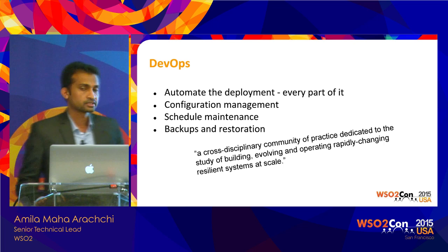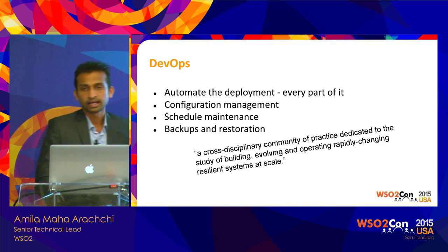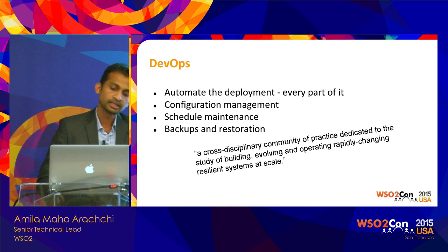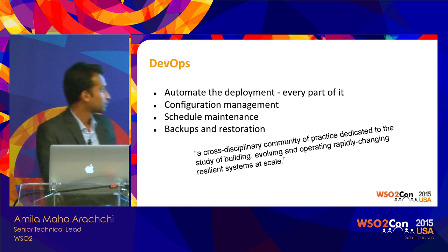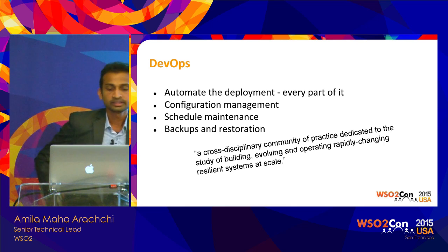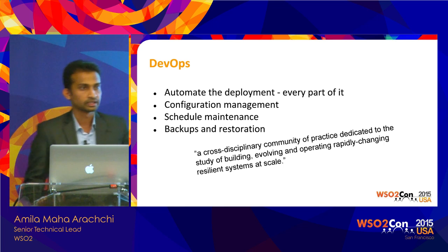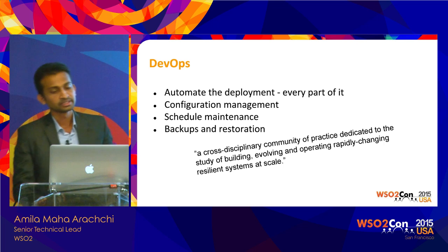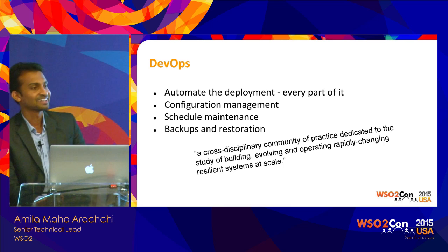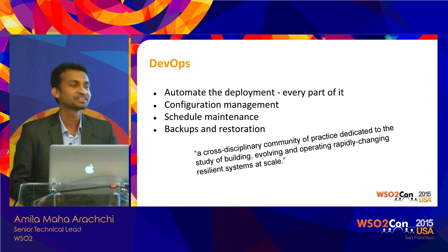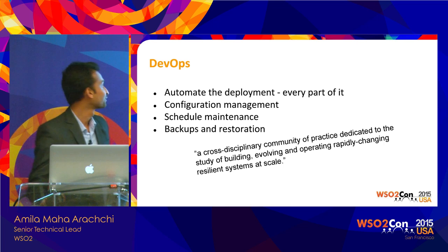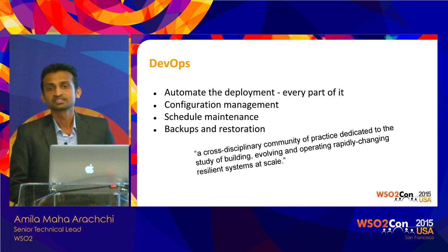Most companies now have DevOps teams. I was trying to find a proper definition for DevOps, and the one I could understand is: it's the study of building, evolving, and operating rapidly changing, resilient systems at scale. That's what our DevOps team does at WSO2. The DevOps team can automate every corner of a deployment. The DevOps team lead at WSO2 advises his team to automate everything so you don't have to do it again and again — which is actually very good advice.